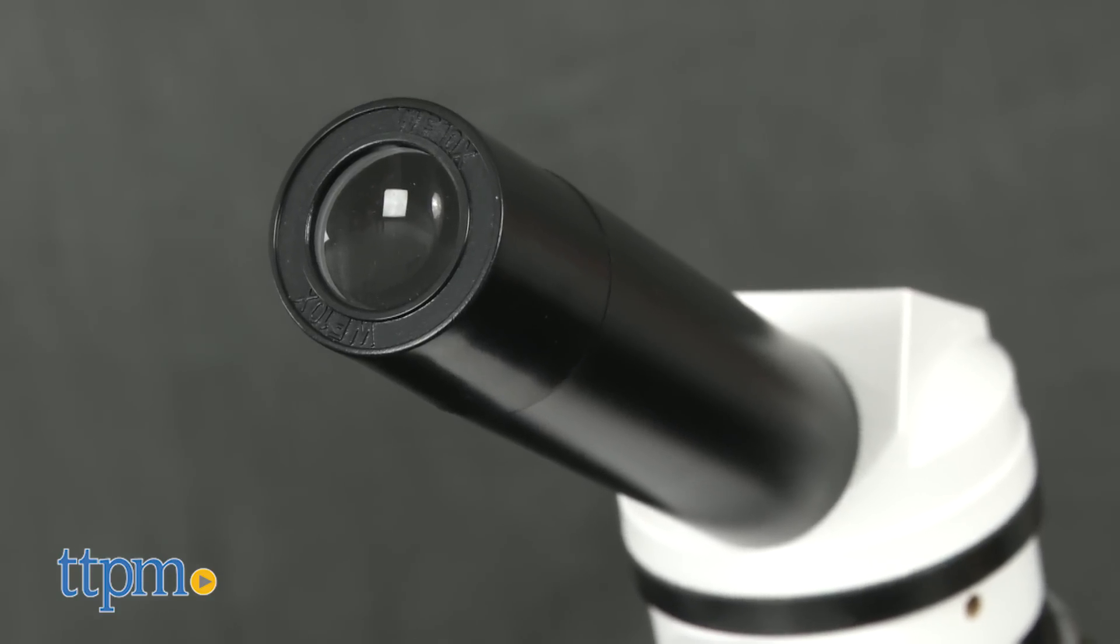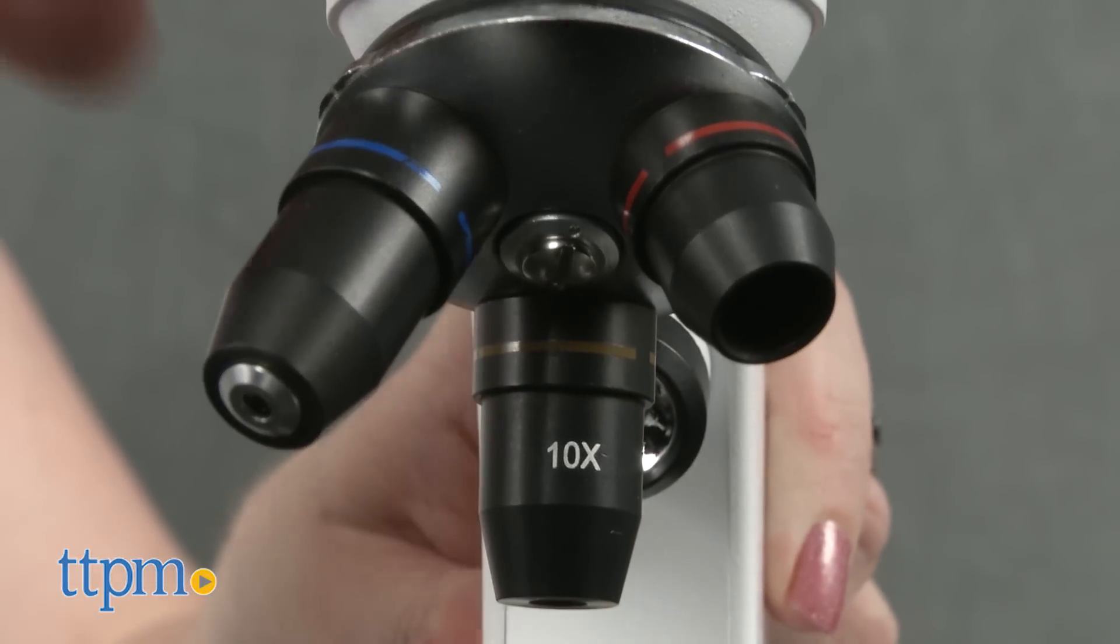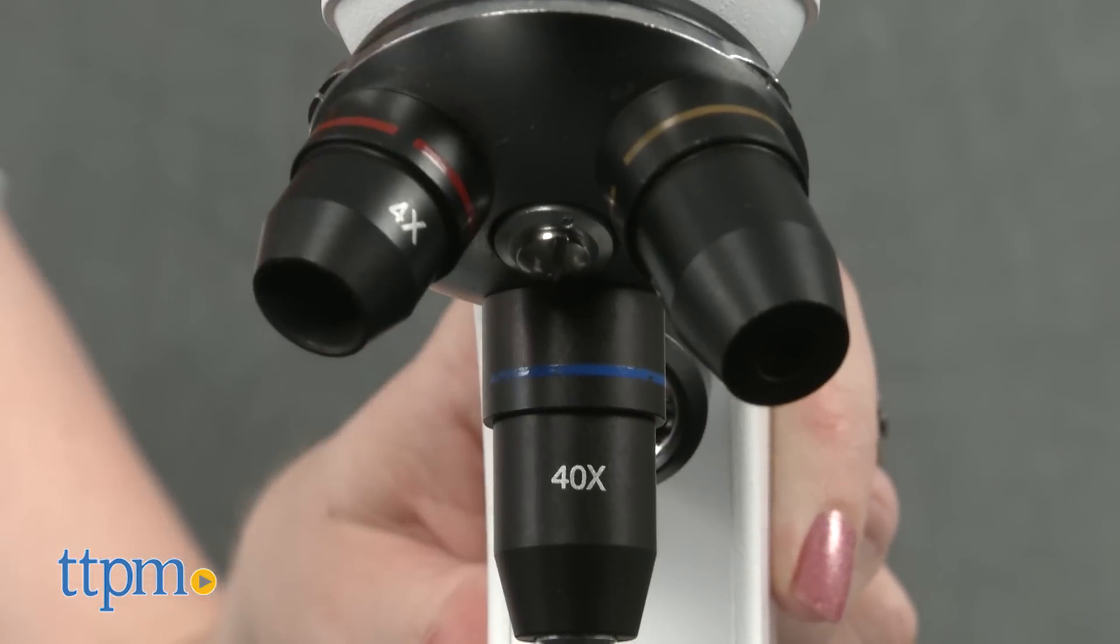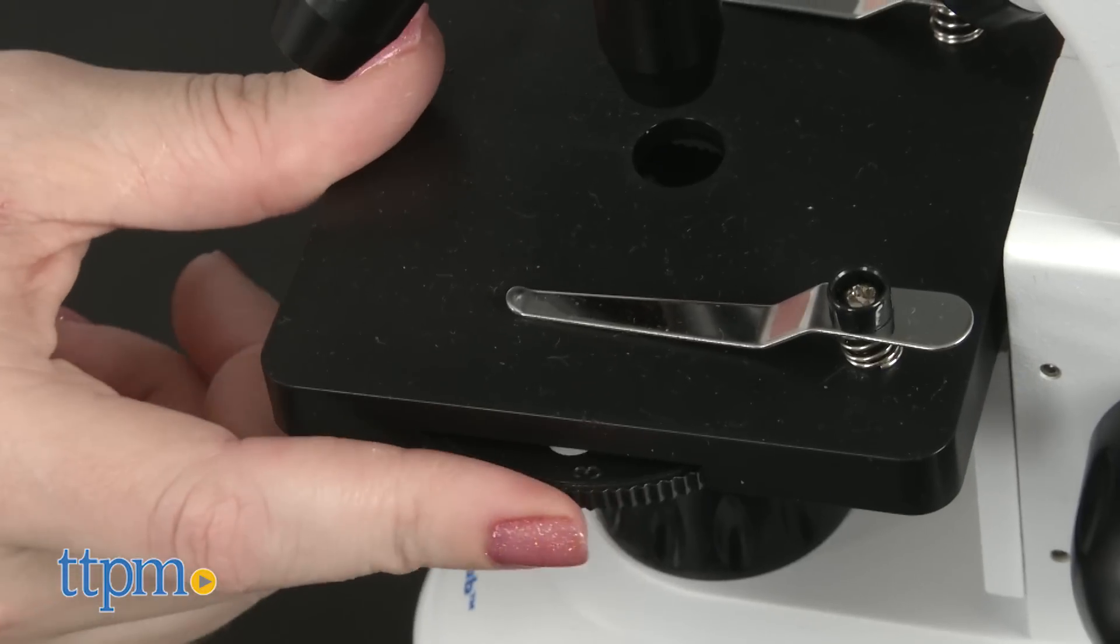The microscope has a 10x eyepiece, 4x, 10x, and 40x objectives, real optical glass lenses, dual focusing knobs, and a 6-hole disc diaphragm.